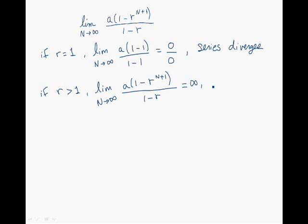We now look at what happens when R is less than minus 1. On the numerator, we have an exponential function which tends to minus infinity, but multiplied by a minus sign, giving positive infinity. On the denominator, we have a positive constant. So the limit tends towards positive infinity, and the series diverges.